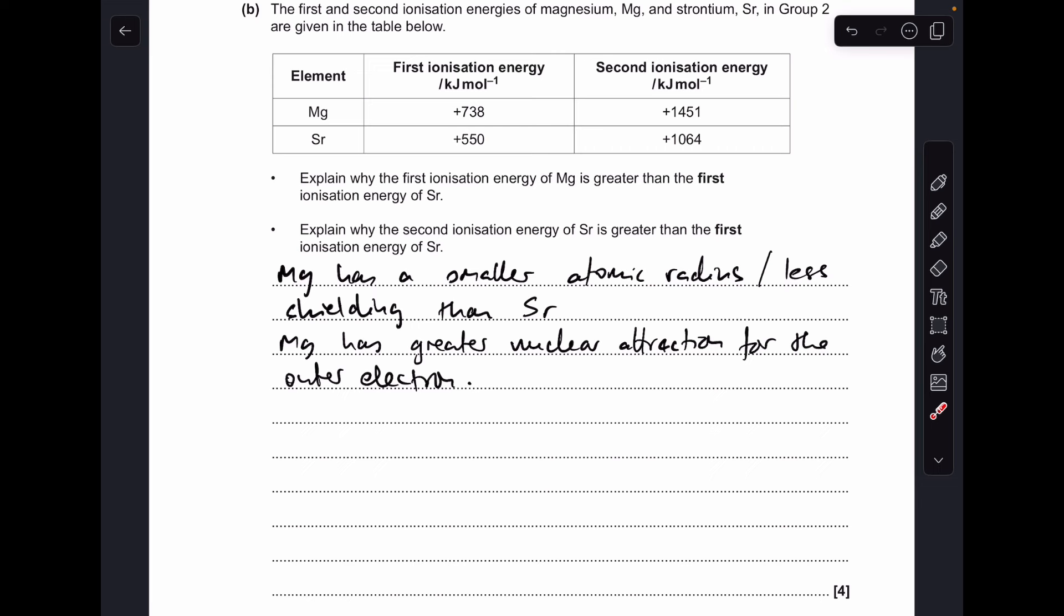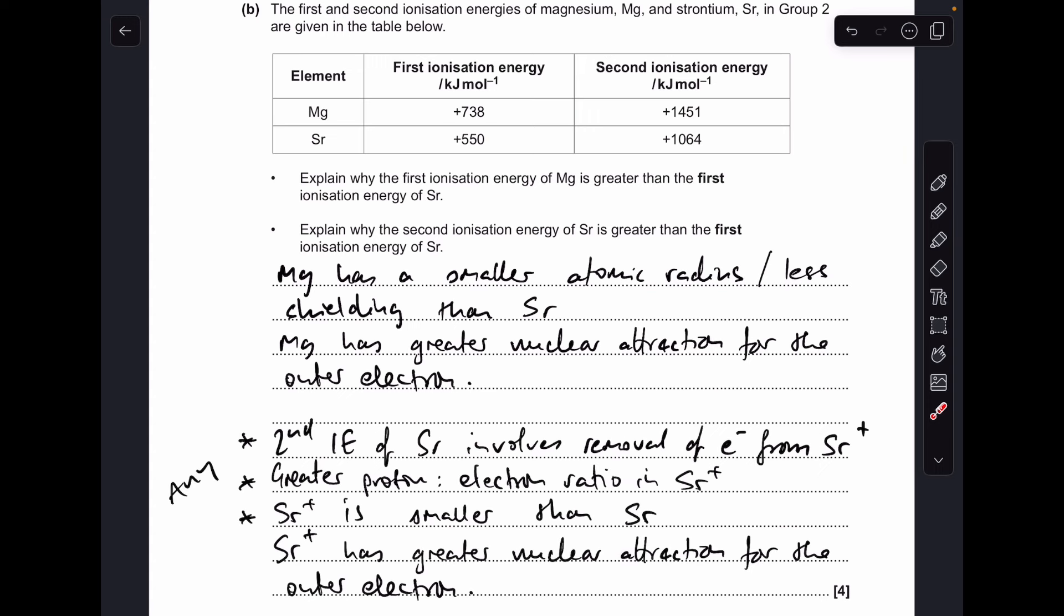Well, magnesium is higher up group 2 than strontium, so it's going to have a smaller atomic radius, or you could say it's got less shielding than strontium. Therefore, magnesium has a greater nuclear attraction for the outer electron.